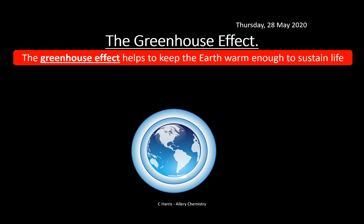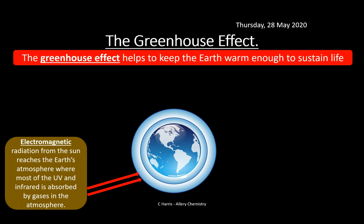It's incredibly topical, with governments and world leaders trying to come up with strategies to reduce emissions — whether through taxation, technology, or social changes in the way we live our lives. The first thing to understand is that electromagnetic radiation from the sun reaches the earth's atmosphere, where most of the UV and infrared is absorbed by the gases in the atmosphere.